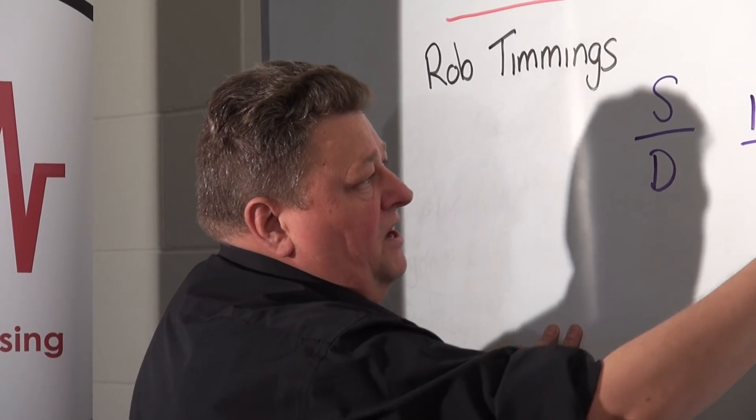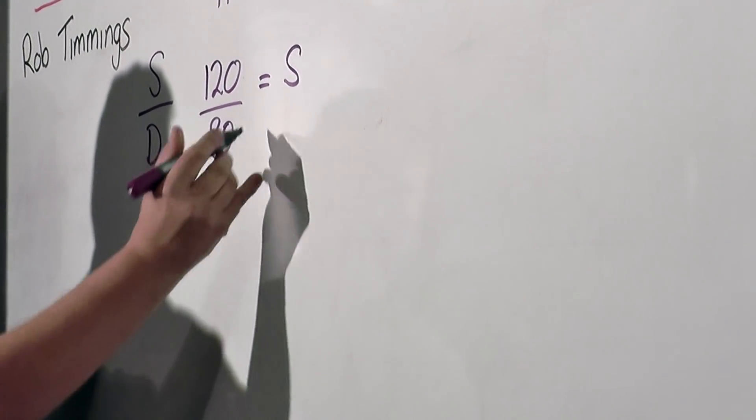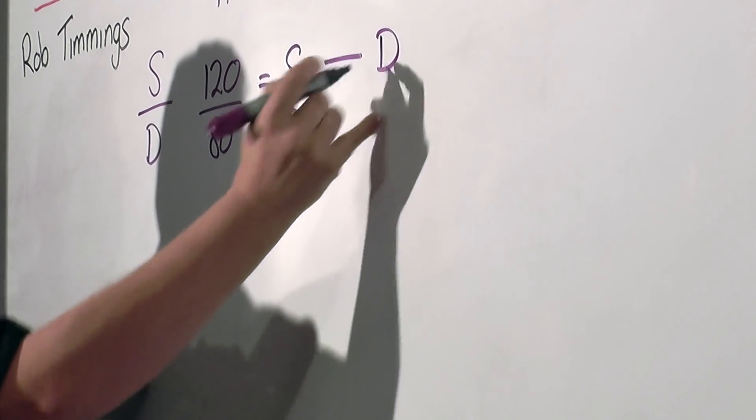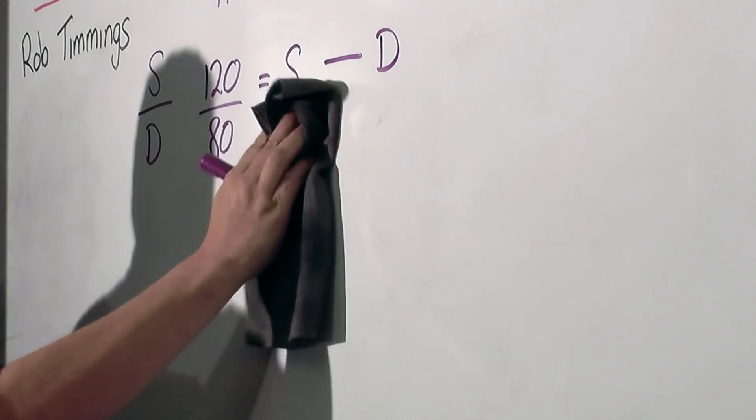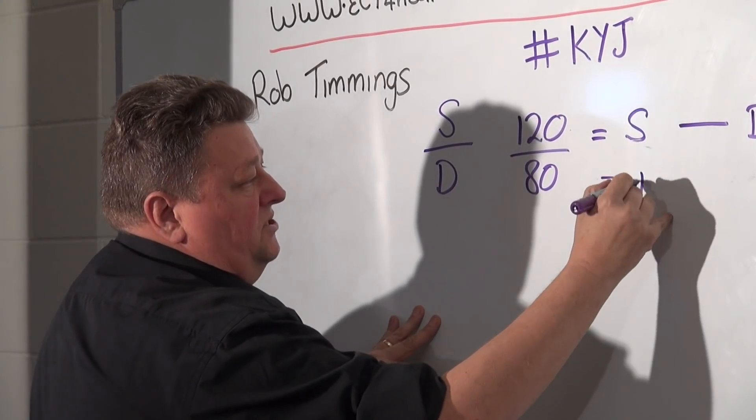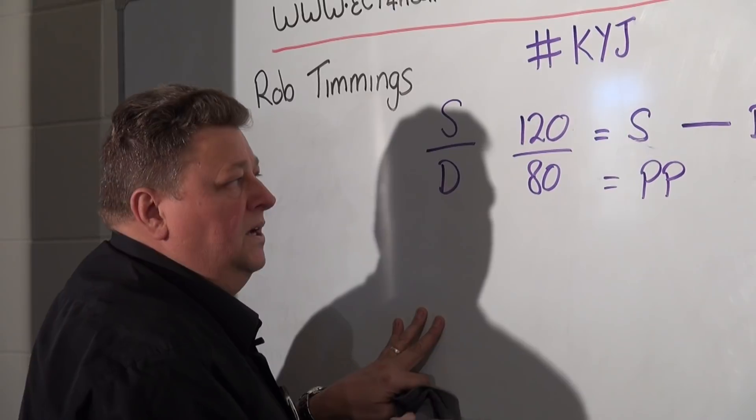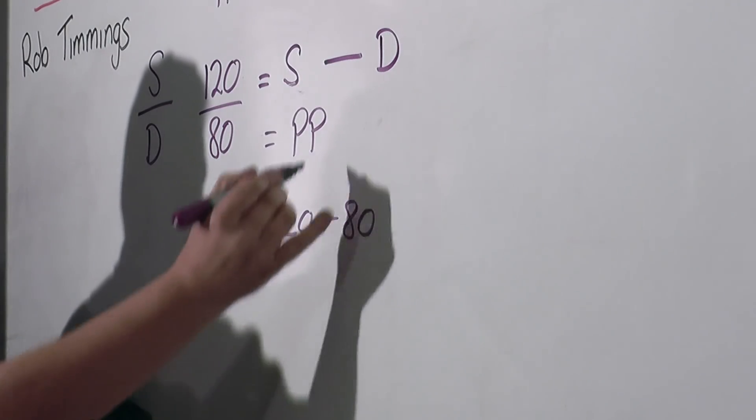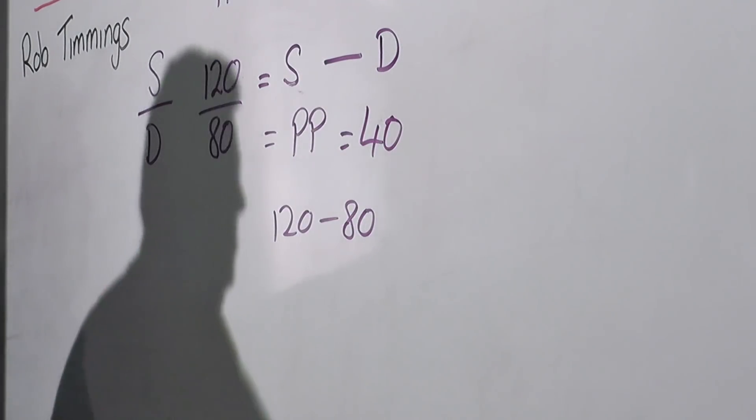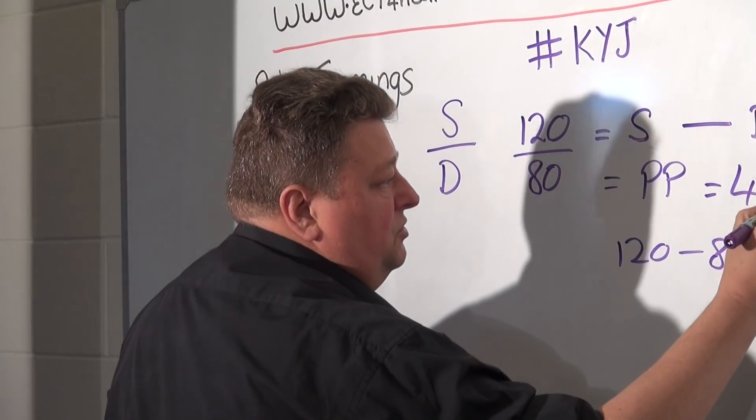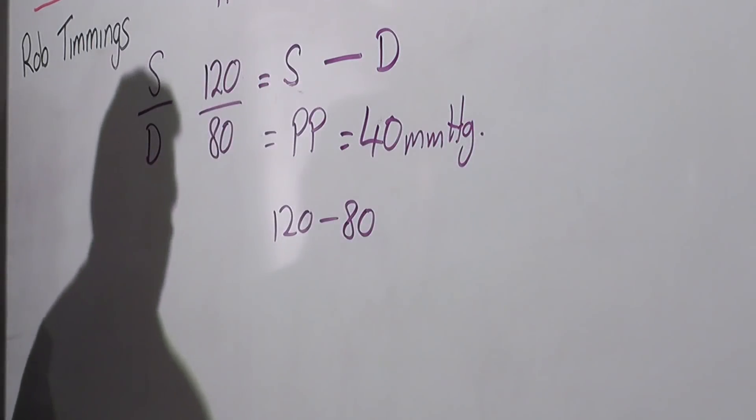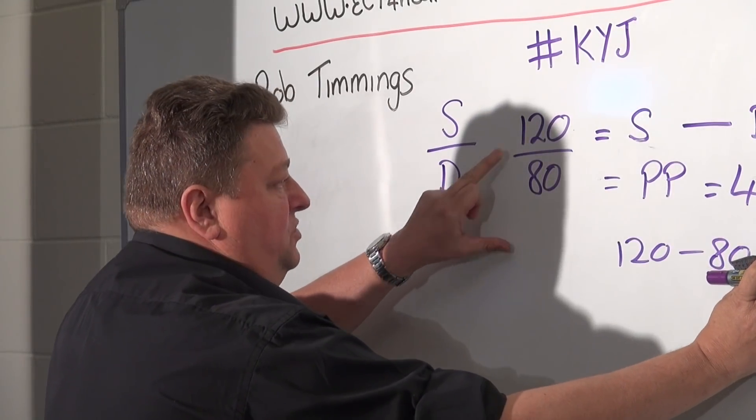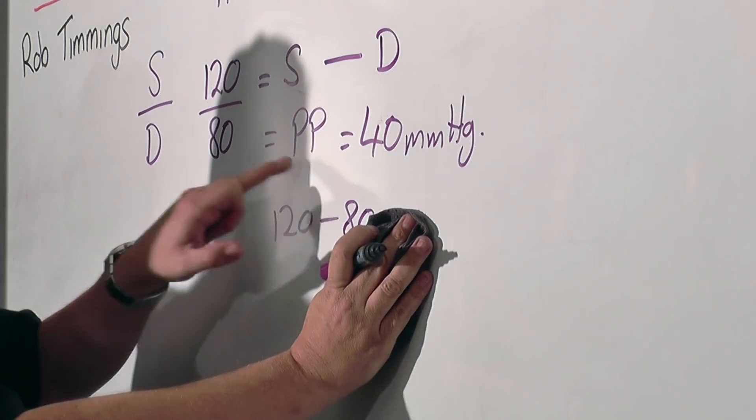Then we have there our systolic and our diastolic. Now between these two numbers if I was to take my systolic value which is the 120 and my diastolic value which is the 80 and I was to subtract the diastolic from that systolic value what I'd have is what's referred to as the pulse pressure and so in this instance if I took 120 and I subtracted 80 from that I would have a pulse pressure which in this example equals 40 millimeters of mercury. So we know that we've got a patient with a BP of 120 on 80 and that gives us therefore a pulse pressure of 40.